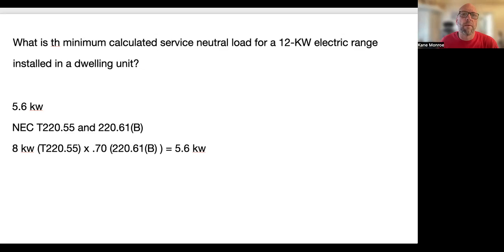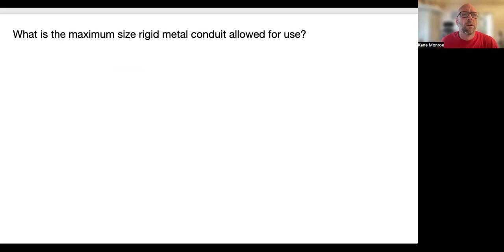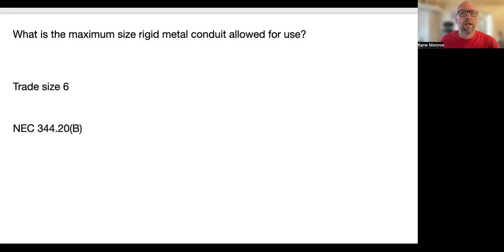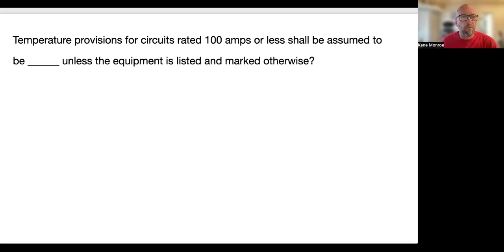What's the maximum size rigid metal conduit allowed for use? That is trade size 6 — 334.20(b). I know we call it six-inch conduit or four-inch conduit, but it's actually trade size — whatever that number is. So trade size 6 is your largest conduit.